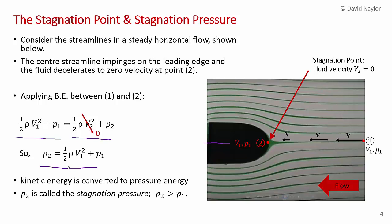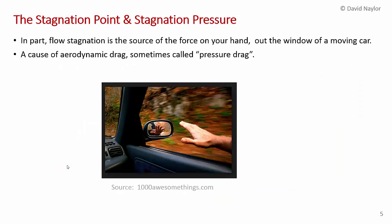It's the combination of the static pressure plus the dynamic pressure as the flow is sort of reversibly decelerated to zero. Remember, there's no losses in the system. There's no viscous losses. Just so you can relate to this, I wanted to mention that in part, flow stagnation is the source of the force that you feel when you stick your hand out the car window that's moving down the highway.